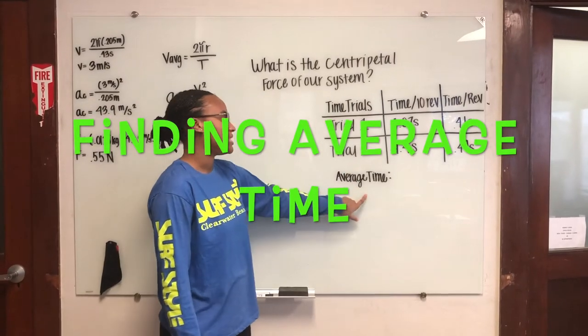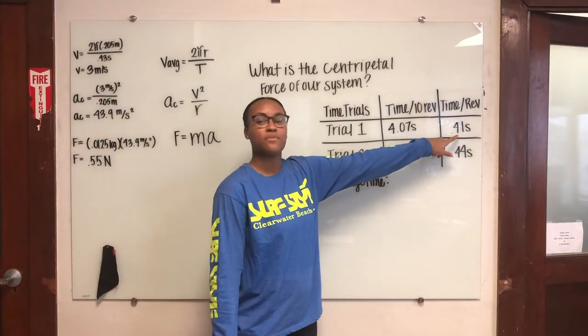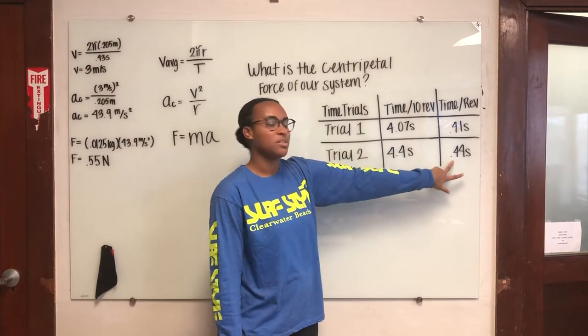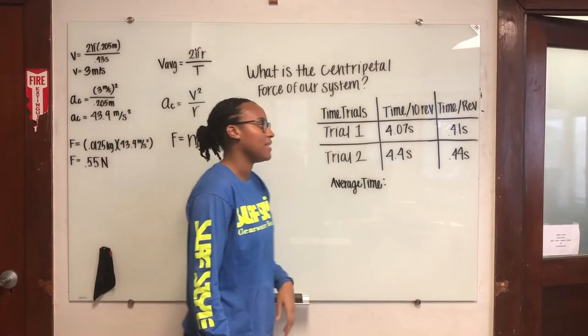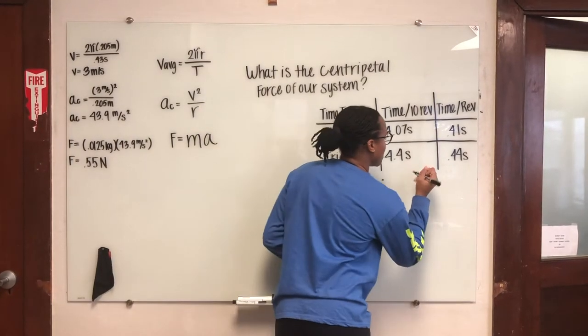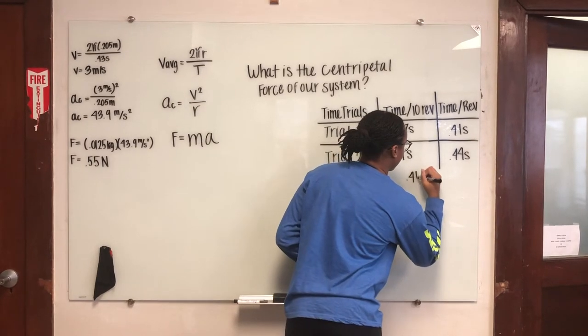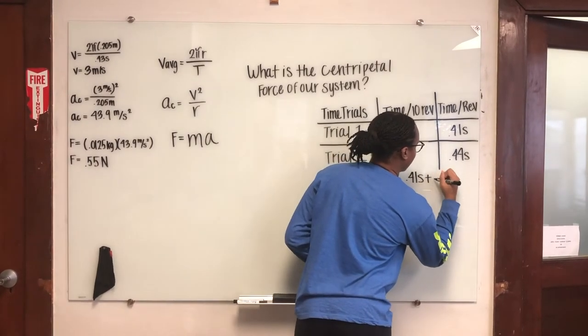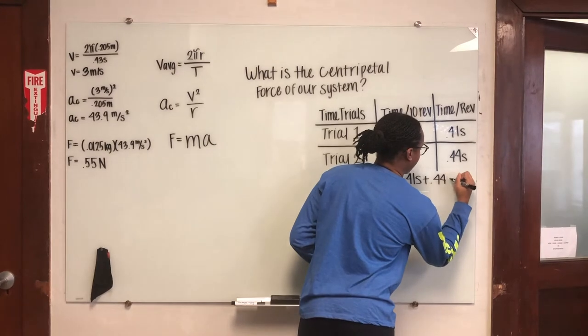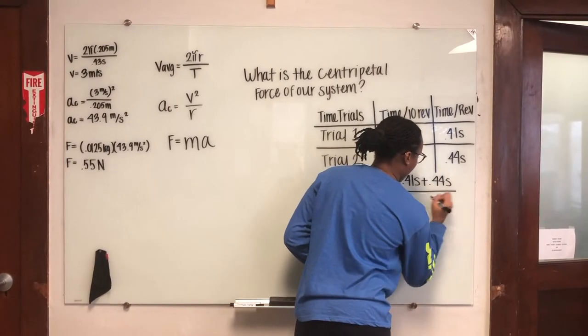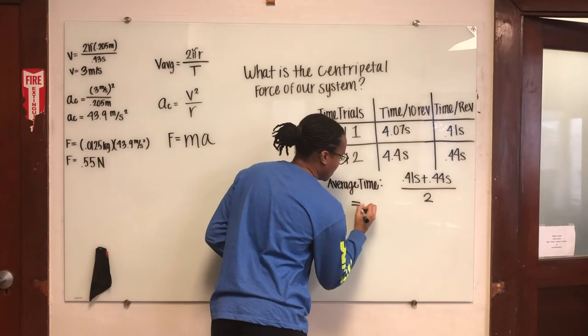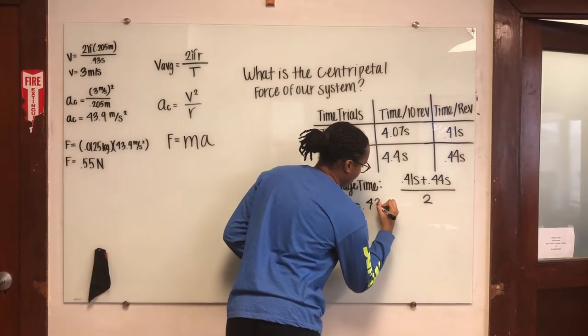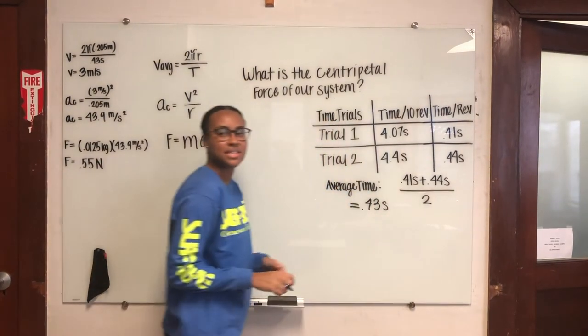So in order to get our average time, we're going to take 0.41 seconds and add it to the 0.44 seconds and divide it by 2. So the average time will equal 0.43 seconds.